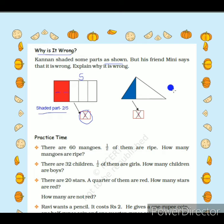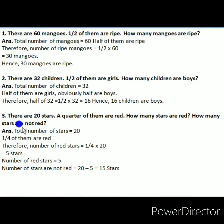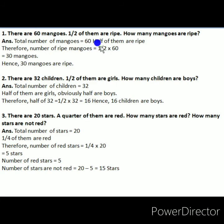Now let's move to the last topic: practice time. We have four questions. Question 1: there are 60 mangoes; one-half of them are ripe — how many mangoes are ripe? To find the half of 60, multiply one-half by 60. Half of 60 is 60 divided by 2, which equals 30. So there are 30 ripe mangoes.